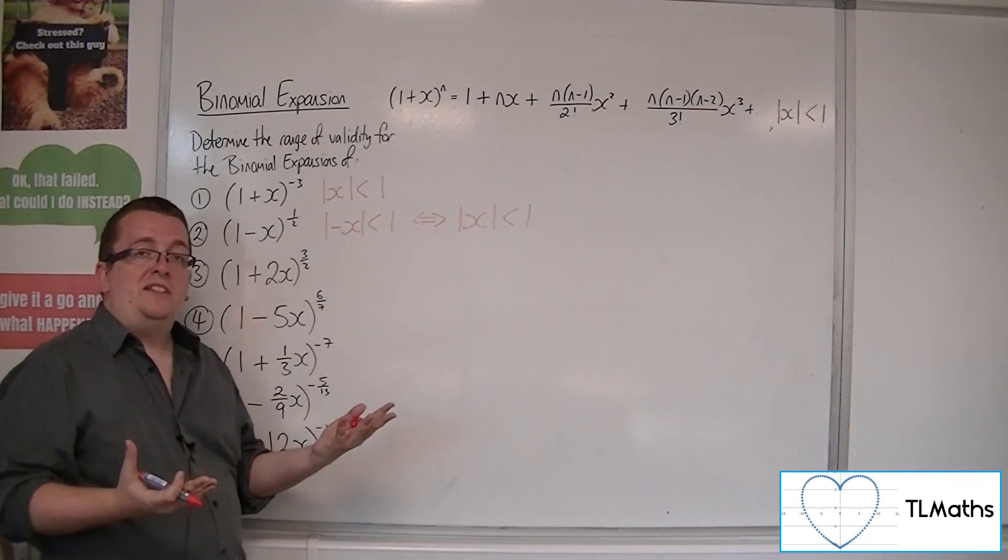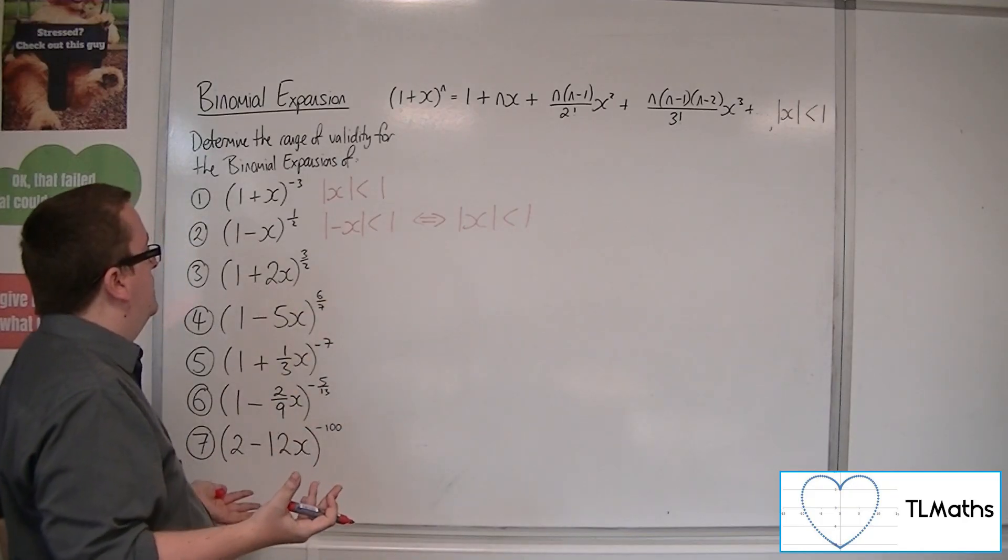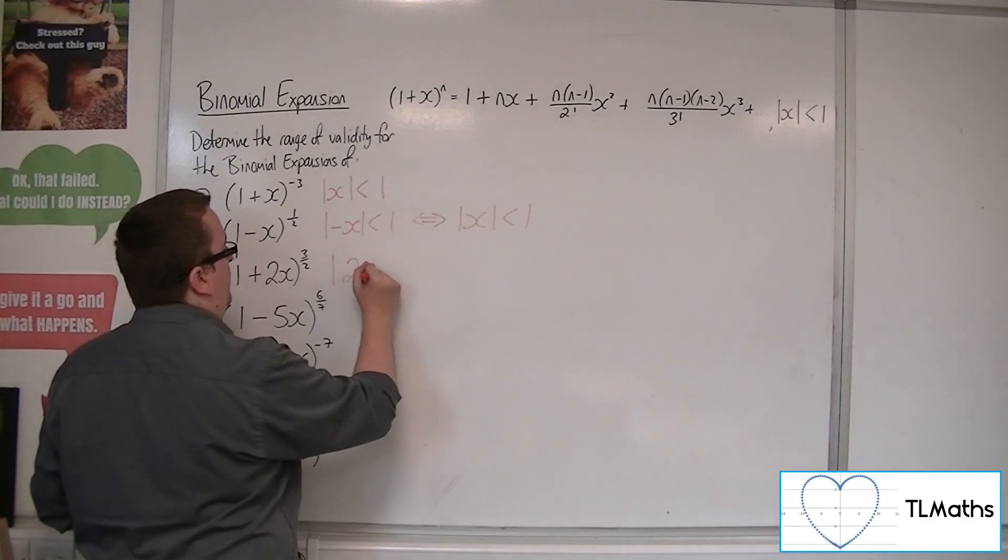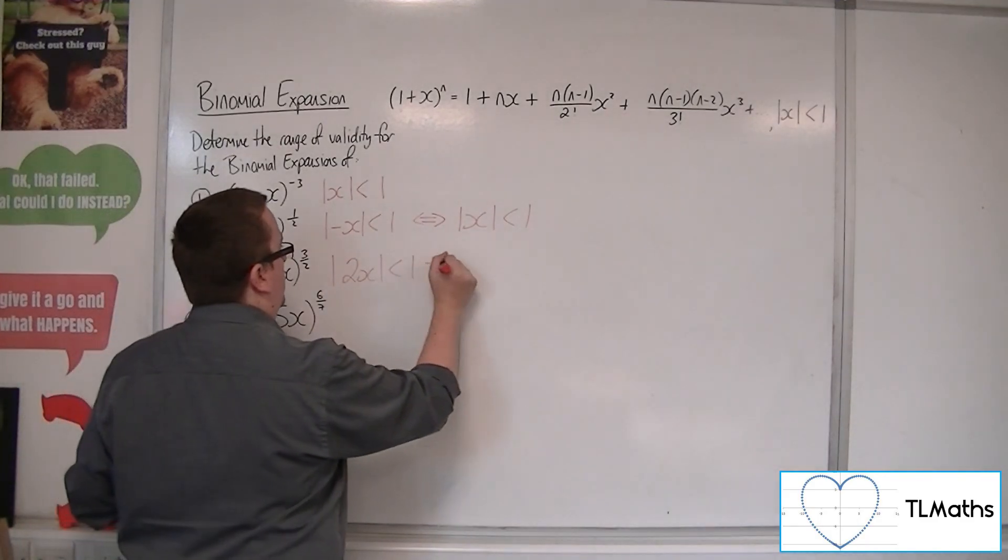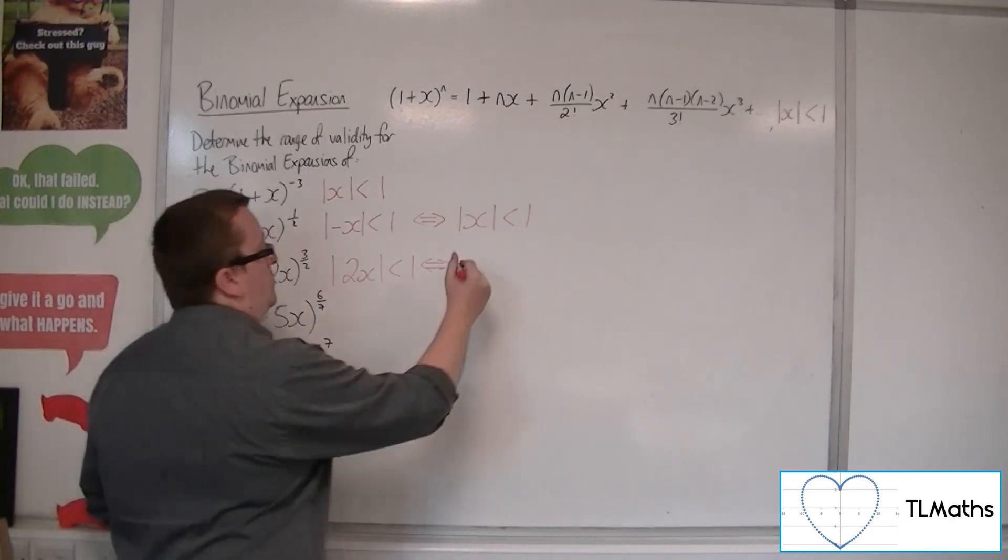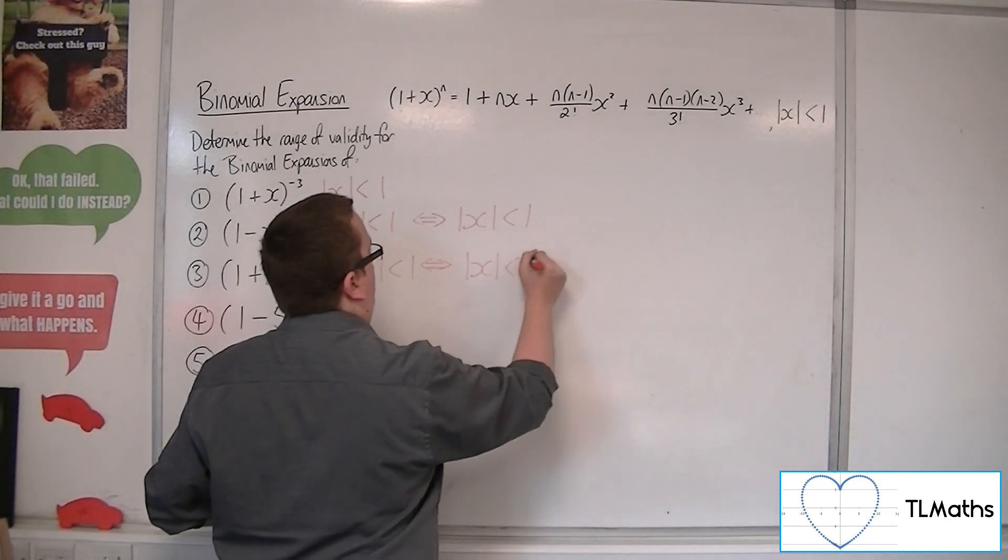So |x| < 1 in both of those first two cases. Now, (1+2x)^(3/2), replace the x with 2x in the range of validity. And then you can divide both sides by 2. So |x| < 0.5.